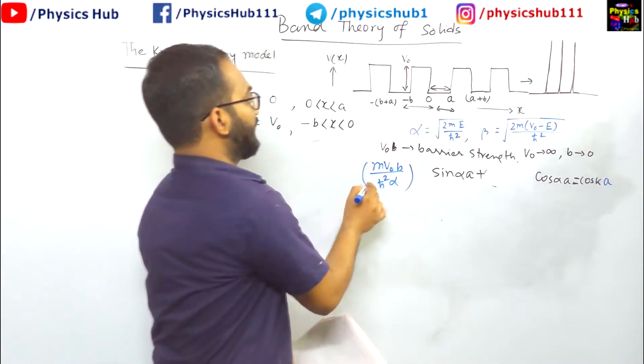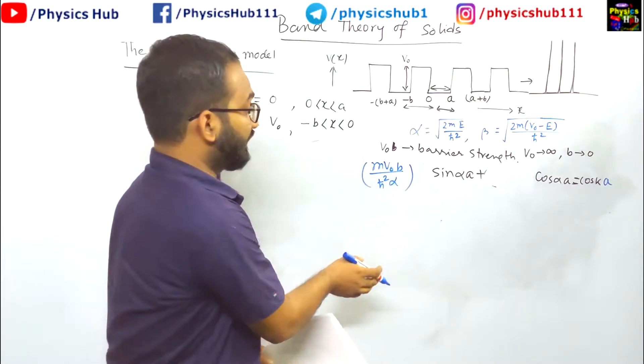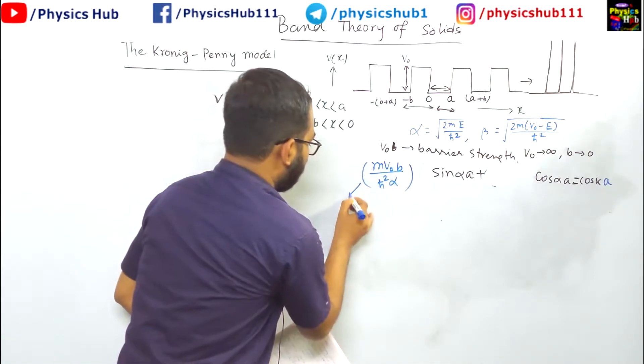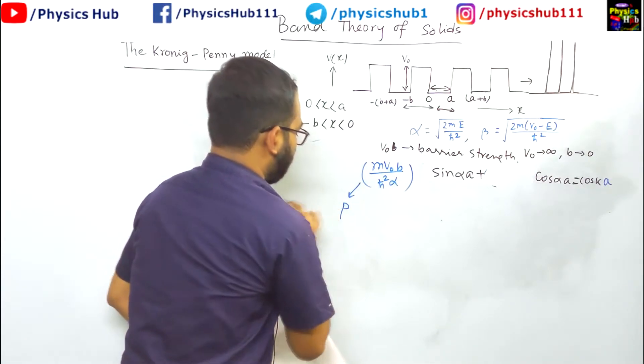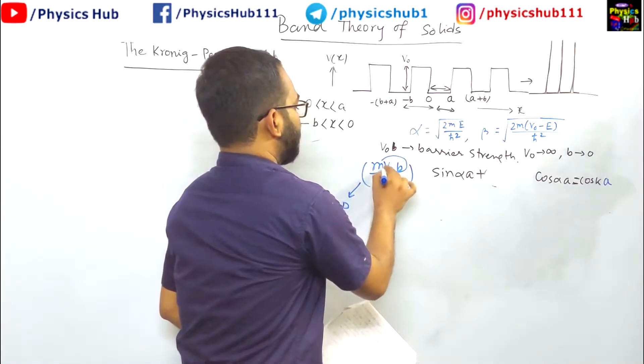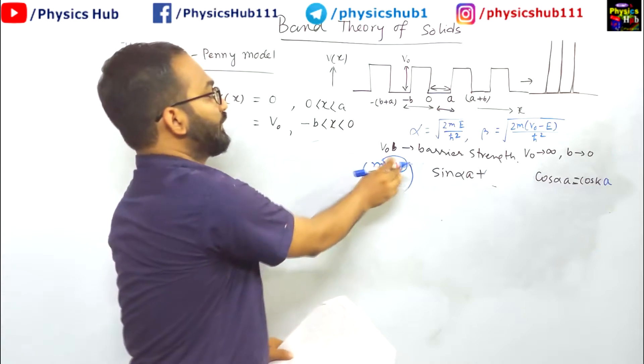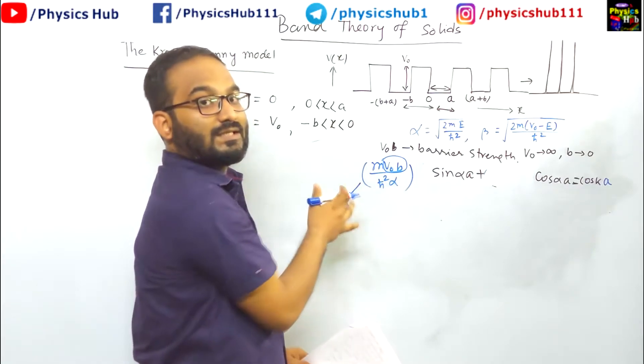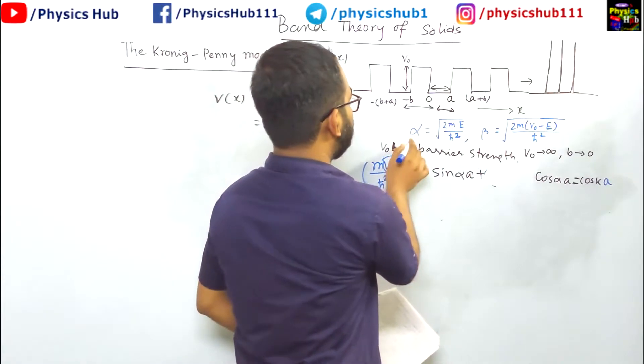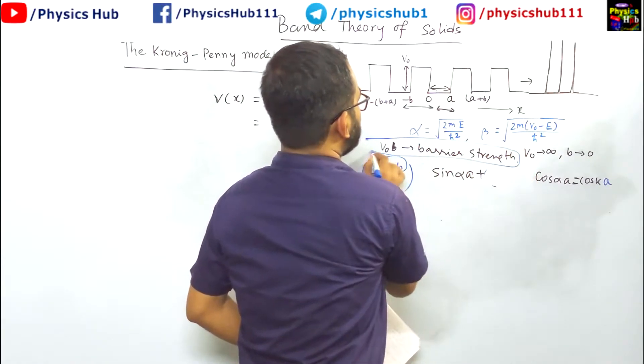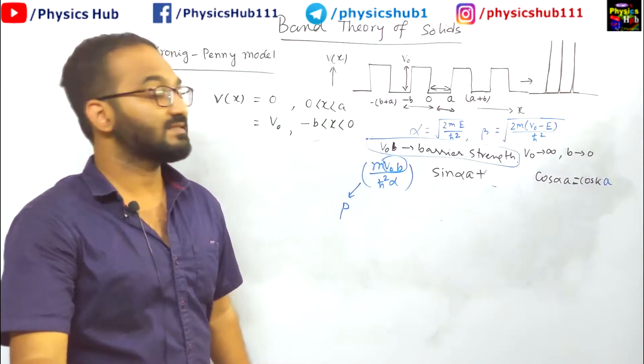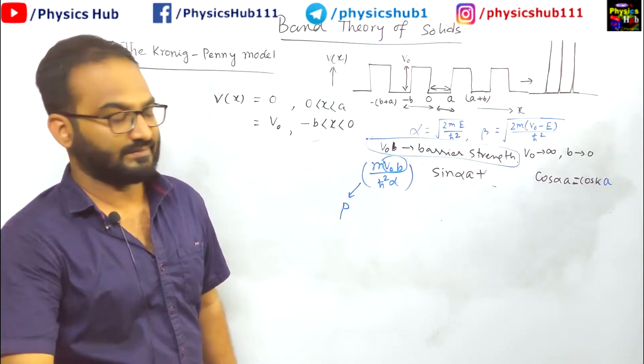This quantity m v naught b divided by h cut square alpha is further taken as p, and you see this term v naught b is there. So p is proportional to v naught b. This p directly gives you the measure of the barrier strength. Whenever you see an increase in p means increase in barrier strength.